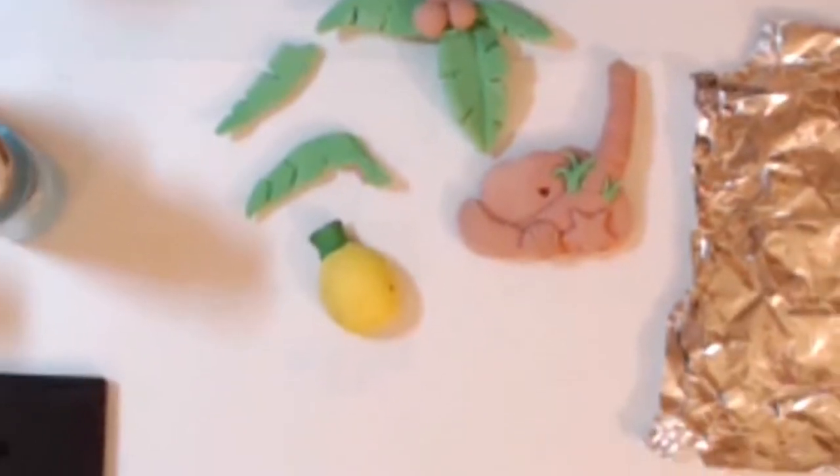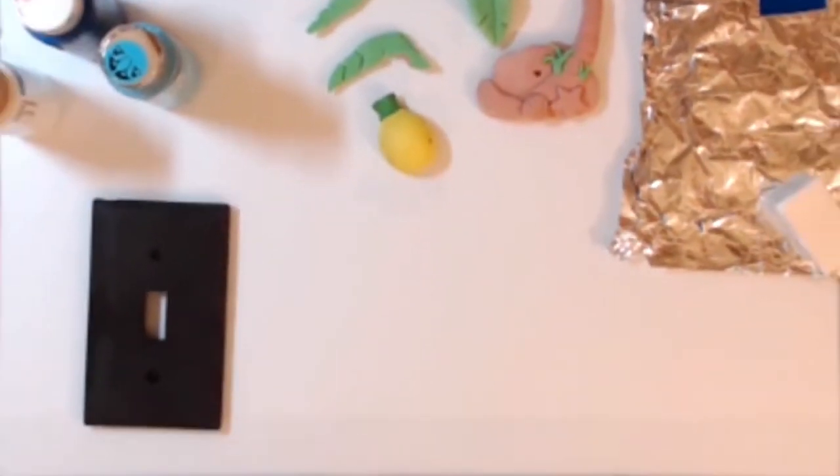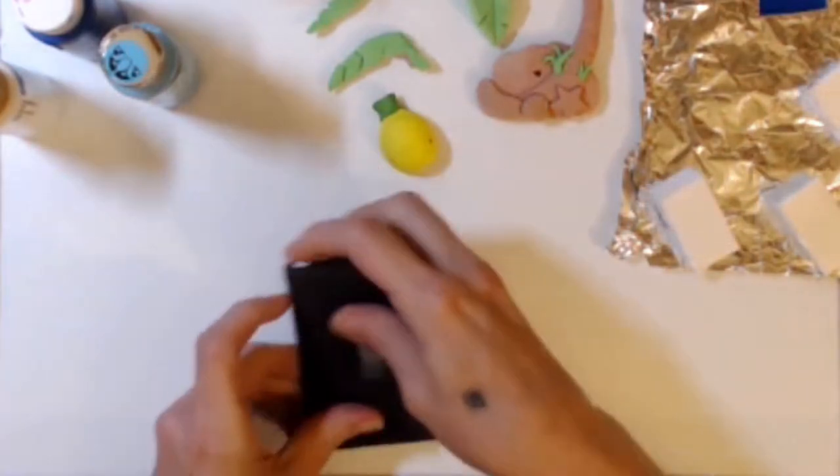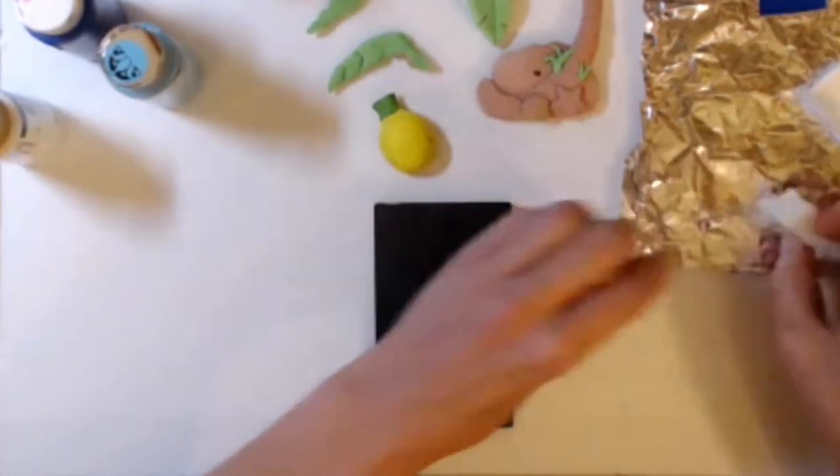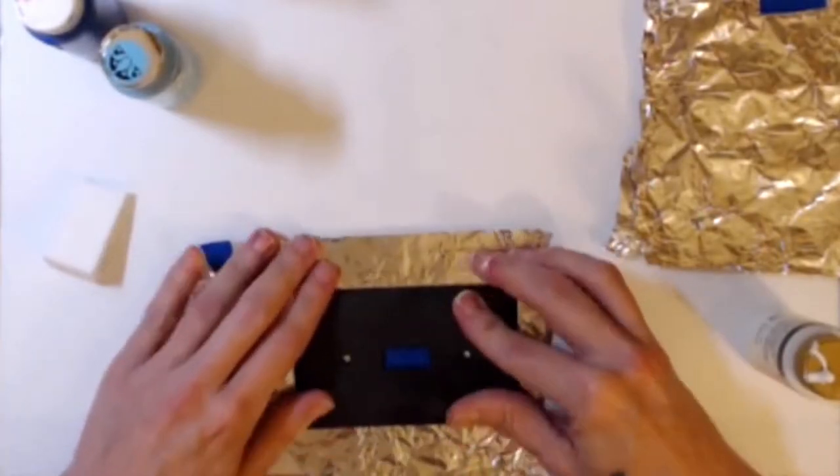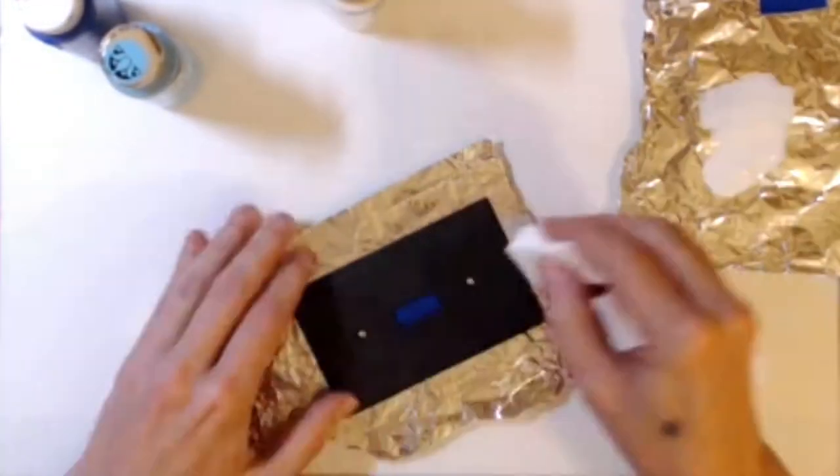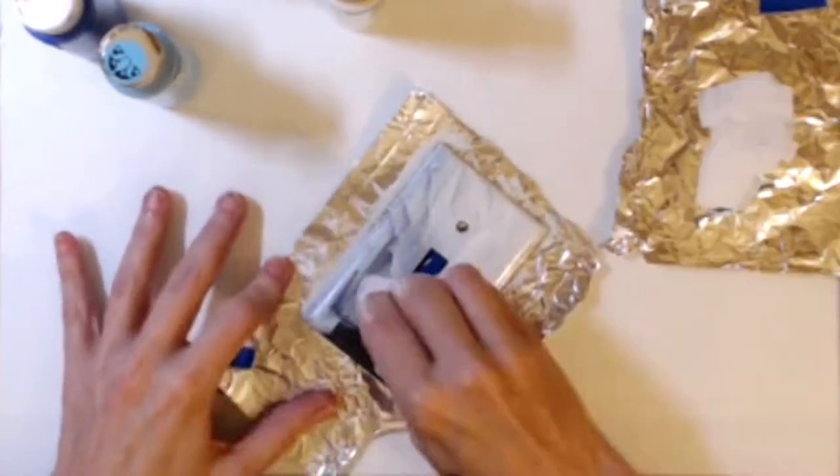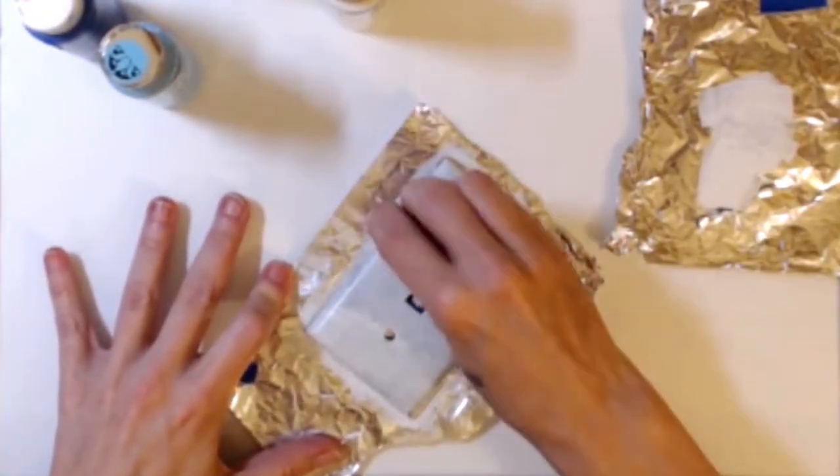I decided to turn this little scene into a light switch cover. So I took a regular light switch. I wish I hadn't chosen brown but I did. I sanded it down so that I'd have something to adhere to.